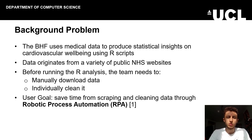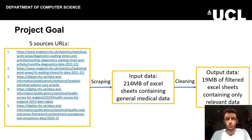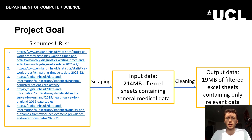The user goal is to save time through scraping and cleaning via RPA. Our project goal therefore aims to take five source URLs and through scraping transform these into an input dataset of Excel sheets, and through cleaning to filter this general medical data to only obtain cardiovascular data.